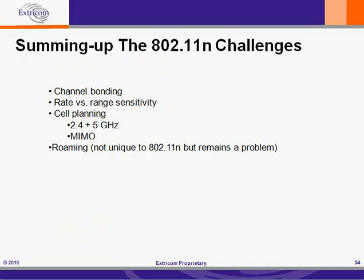Summing up the 802.11 challenges that we've covered: the first is channel bonding, which provides much higher bandwidth but needs twice as many channels. Yet we know that channels are in very short supply in the 2.4GHz band, and not abundant in the 5GHz band either, especially if DFS operation is not possible. We then took a look at the harsh impact of legacy users on 802.11n throughput, and the similarly important rate versus range sensitivity of 802.11n, and how that can lower throughput too if it's not addressed.